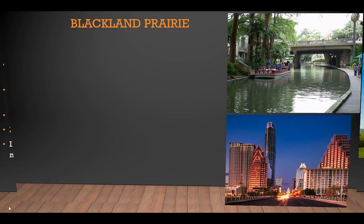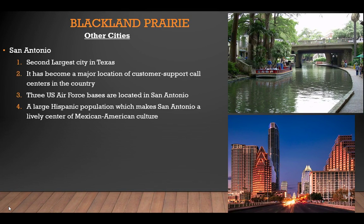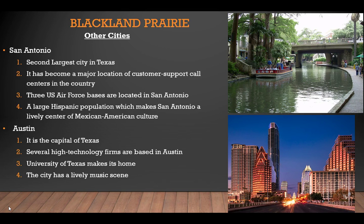Other important cities in the Blackland Prairie region include San Antonio, the second largest city in Texas. San Antonio has started to become a major customer support call center for the country. Three U.S. Air Force bases are located there, and a large Hispanic population makes San Antonio a lively center of Mexican-American culture, as well as home to important historical landmarks. The city of Austin is the state's capital. Several high-tech firms are based in Austin, the University of Texas makes its home there, and the city has a lively music scene.